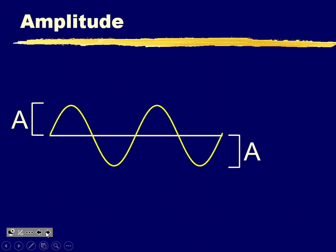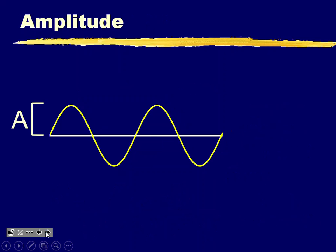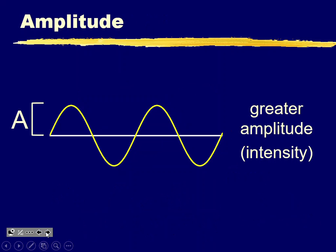Now we're looking at amplitude — the height of the wave. Going from the origin to the top or origin to the bottom is how you label amplitude. Greater amplitude relates to the intensity of the wave. In sound, a larger amplitude means a louder sound; for light, it's the same idea for intensity.